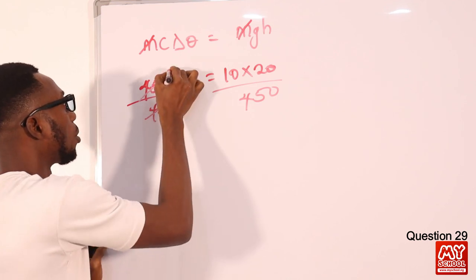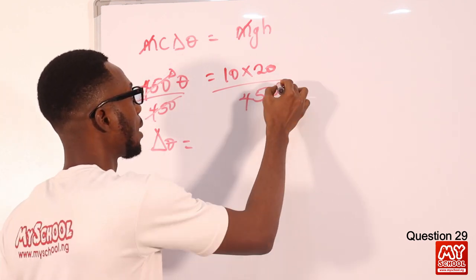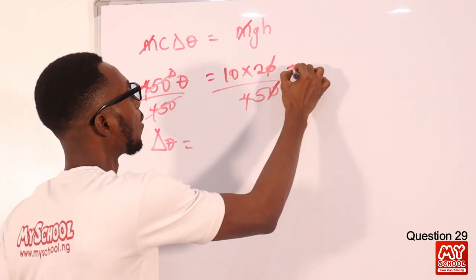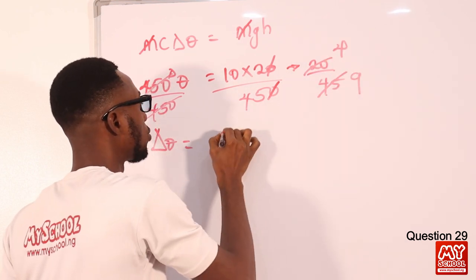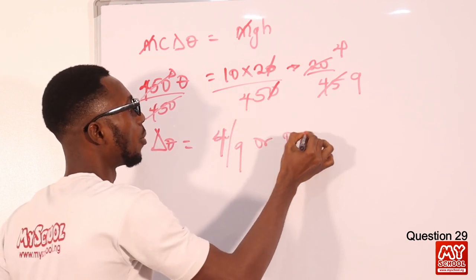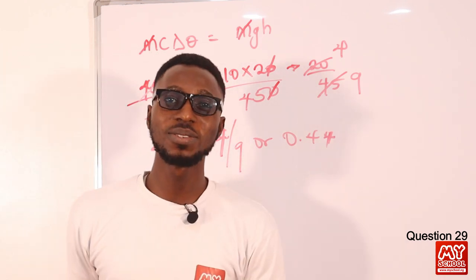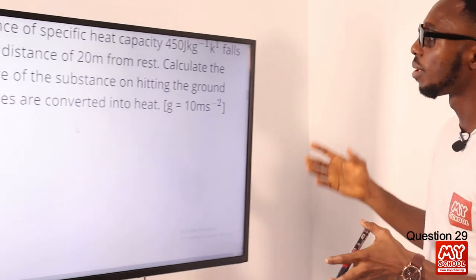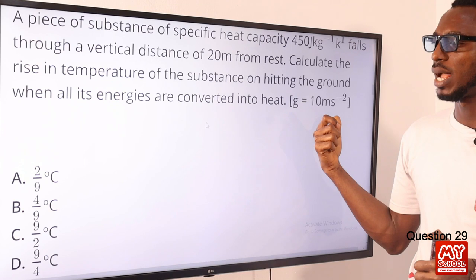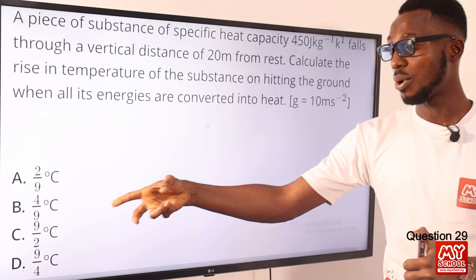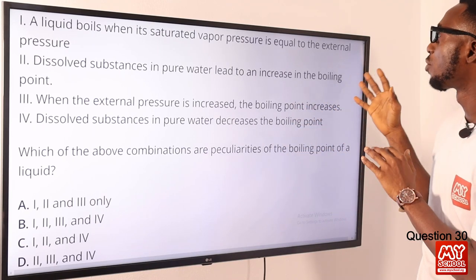Dividing both sides by 450: Δθ = 200/450 = 20/45 = 4/9 ≈ 0.444°C. Going back to the screen, option B is the correct option.